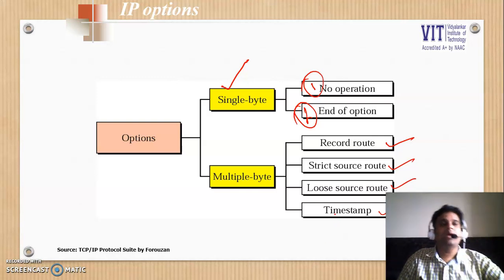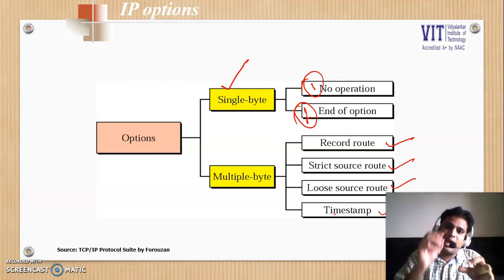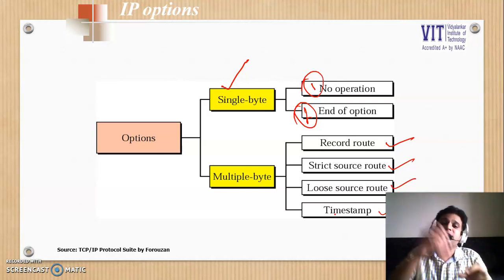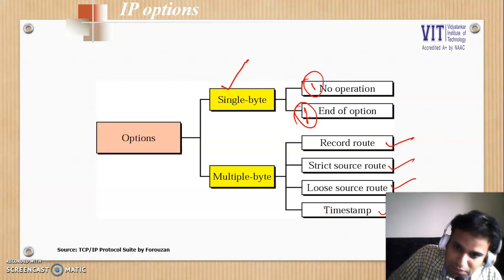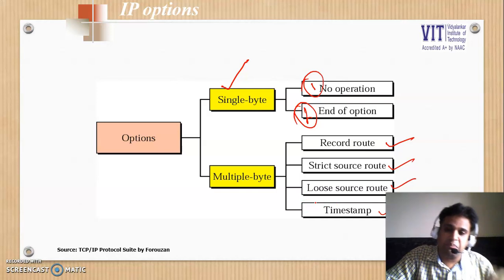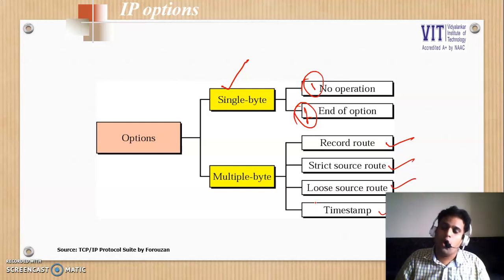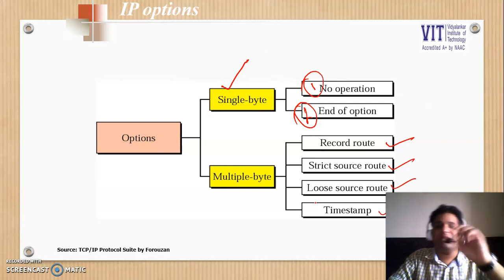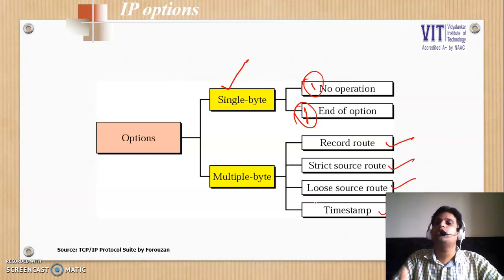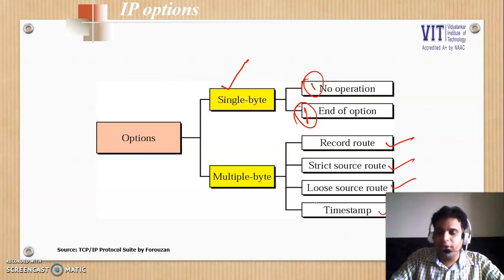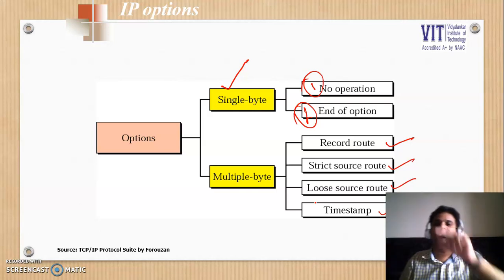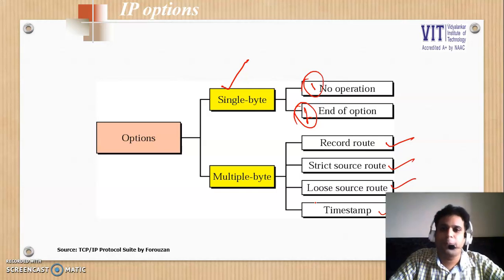When talking about Timestamp, whenever the packet visits a router, that router will put its IP address along with the timestamp of when the packet was received. The timestamp option has variants: the packet can record only the timestamp, or record the IP address and timestamp together, or it can be a combination of timestamp with Strict Source Route — where the packet visits only specified routers and each records its respective timestamp.